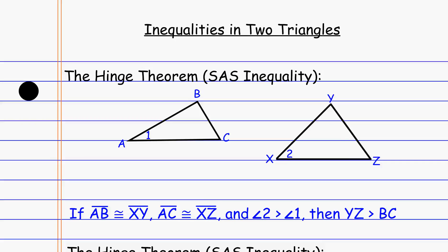Hi there. Today we're looking at inequalities in two triangles. We're going to be comparing two triangles that maybe have some similar features or some congruent pieces, and using that to determine inequalities between the two triangles. We'll have some pieces that maybe we know are congruent, other pieces that we know are less than or greater than certain pieces, and that'll help us determine whether or not other pieces of these triangles are going to be smaller or bigger.